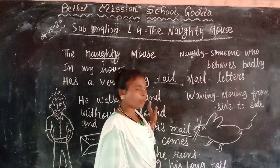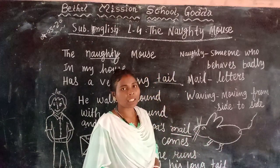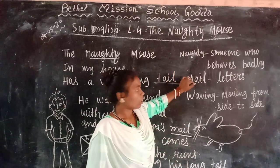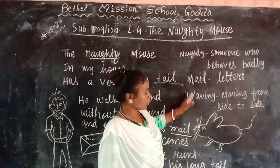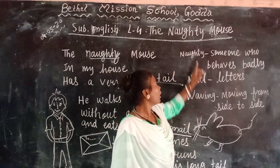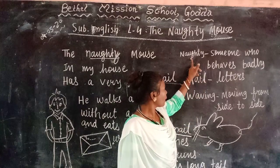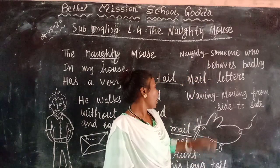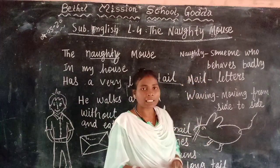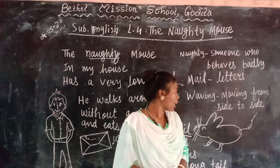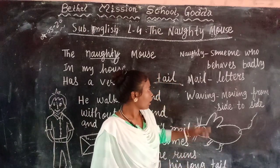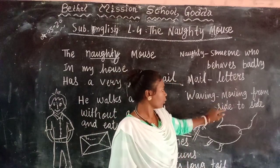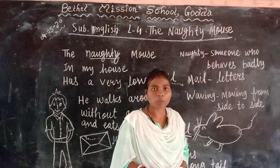All these things you will learn by heart. I have written down here what the meanings are — this also you will learn. Naughty means someone who feels badly. Mail means letters. And waving is moving from side to side.